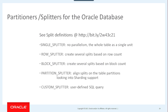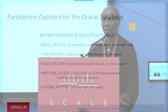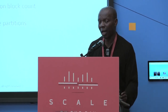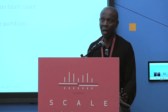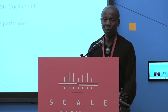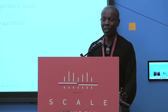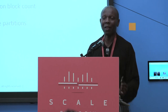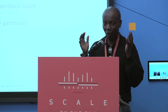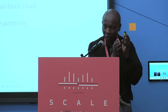We have a single splitter, meaning the whole table is treated as one logical partition — no parallelism, only one task. Then we have the row splitter: if your table has one million rows and you have 100 processing nodes, you divide one million by 100, giving 10,000 rows. Each partition will have 10,000 rows, so each of the 100 nodes processes one partition.